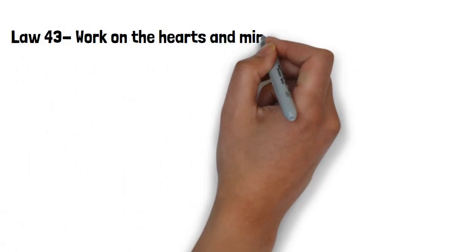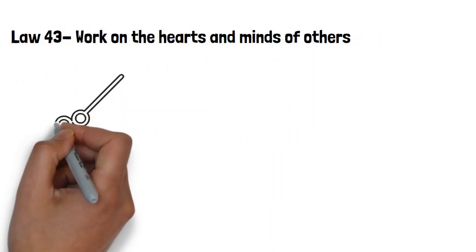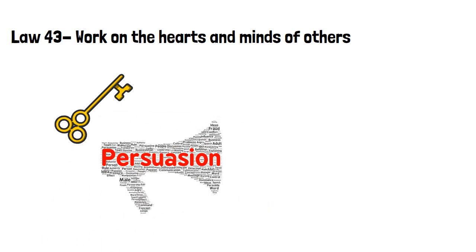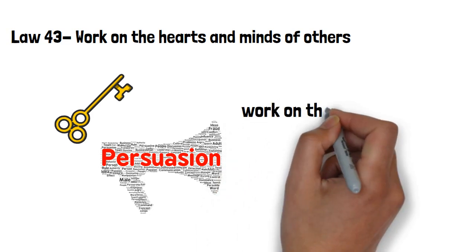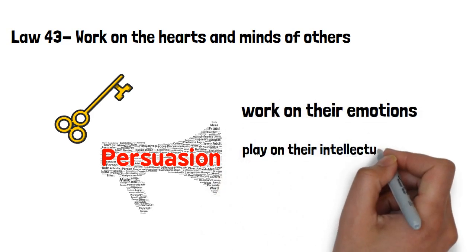Law 43, work on the hearts and minds of others. Do not forget that the key to persuasion is softening people up and breaking them down, gently. Charm them with a two-sided method, work on their emotions and play on their intellectual weaknesses.